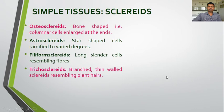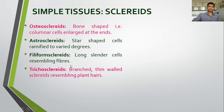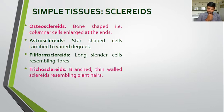Some more types of sclerides: filiform sclerides are long slender cells resembling fibers. We know sclerides are short cells and fibers are very long cells, so these filiform sclerides are long slender cells resembling fibers. Trichosclerides are branched, thin-walled sclerides resembling plant hair — named after 'trichome', the outgrowths or hairs seen on leaf and stem. They are branched thin-walled sclerides resembling plant hairs, so these are called trichosclerides. These are the different types of sclerides.